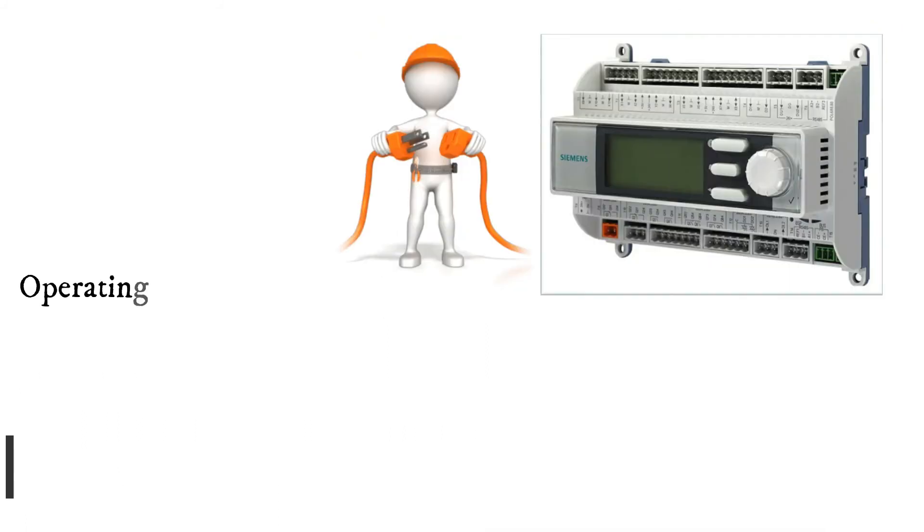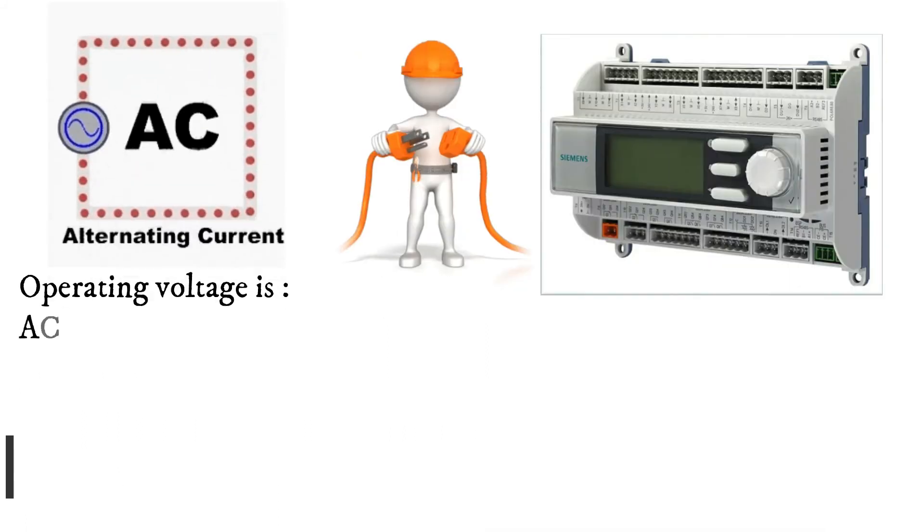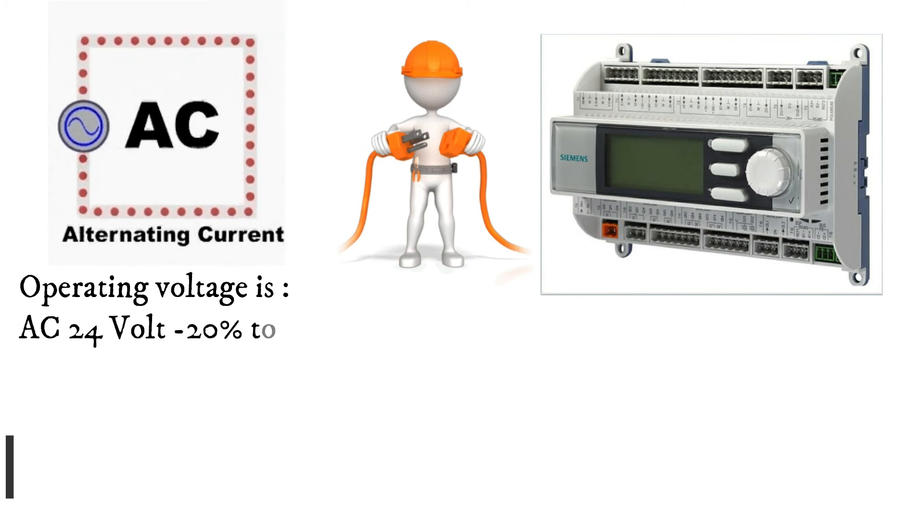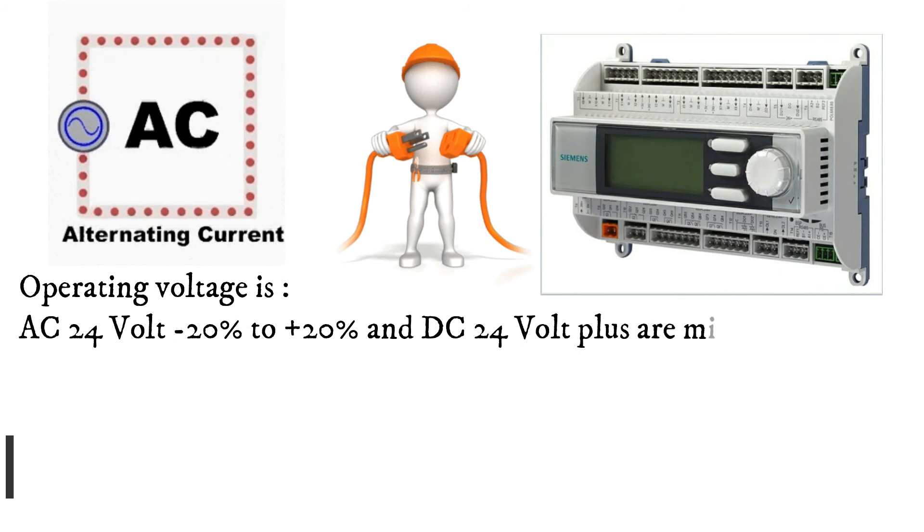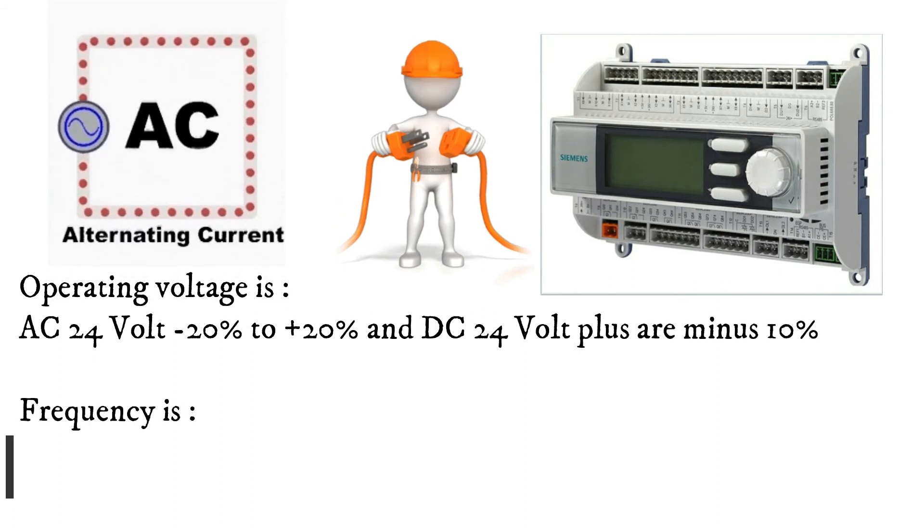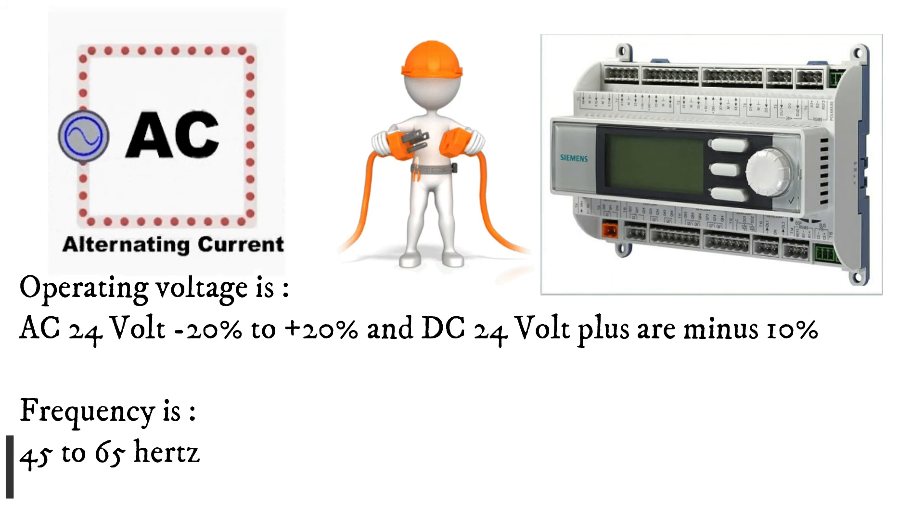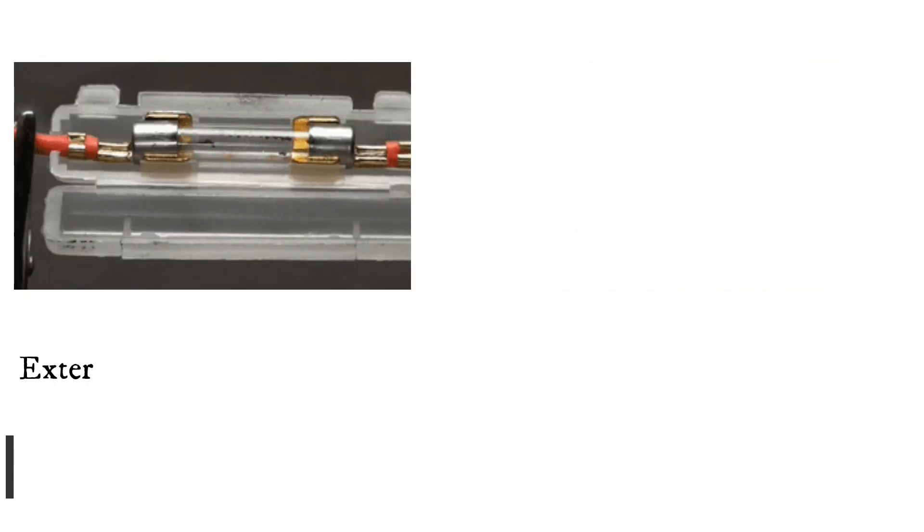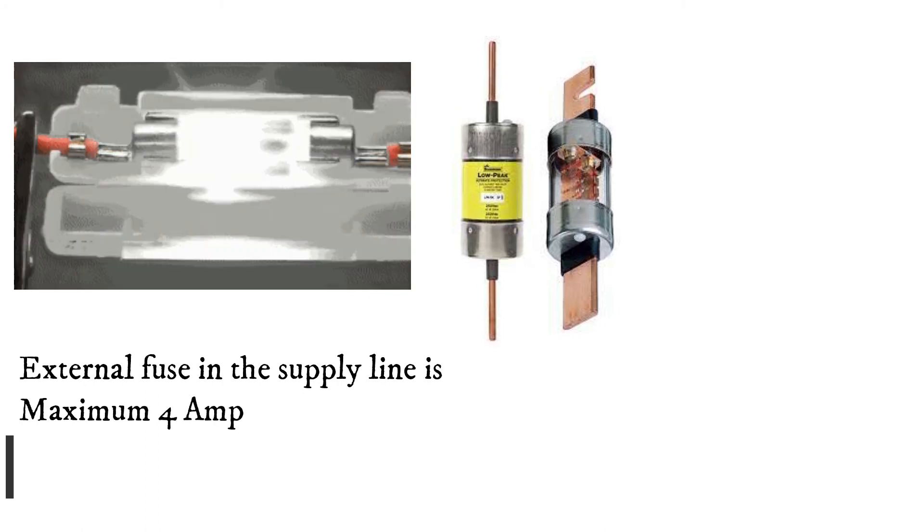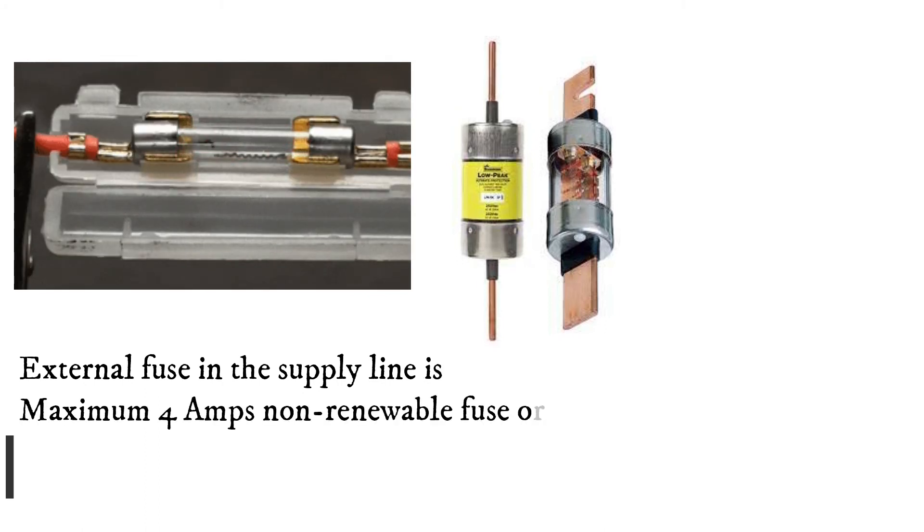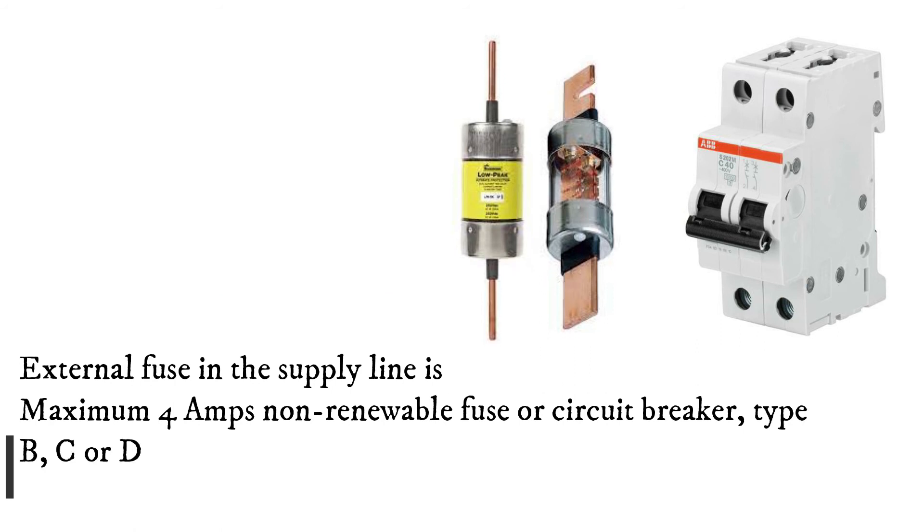Operating voltage: AC 24V -20% to +20% and DC 24V ±10%. Frequency: 45 to 65Hz. External fuse in the supply line: Maximum 4A non-renewable fuse or circuit breaker, type B, C or D.